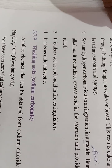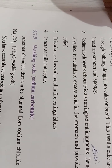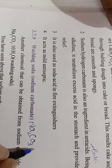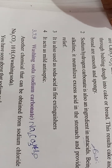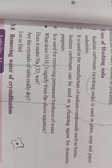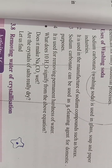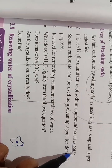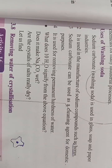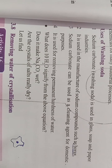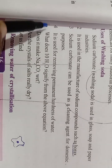Washing soda: the formula is Na₂CO₃ - sodium carbonate with about 10 water molecules. Uses of washing soda: it is used in glass, soap, and paper industries; used in the manufacture of sodium compounds such as borax; sodium carbonate can be used as a cleaning agent for domestic purposes; and it is used for removal of permanent hardness of water.